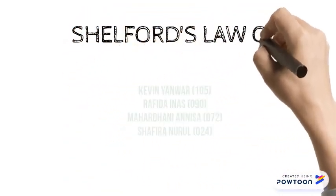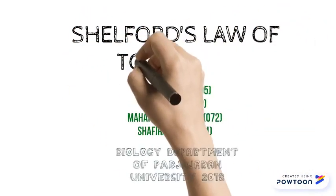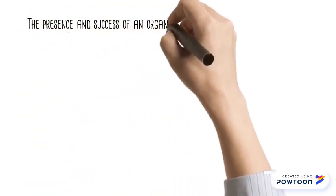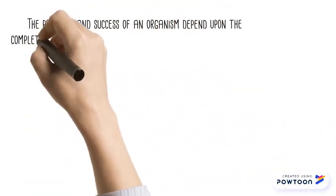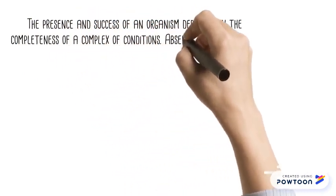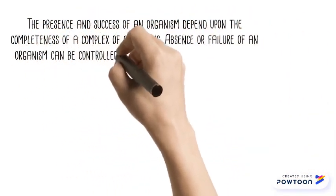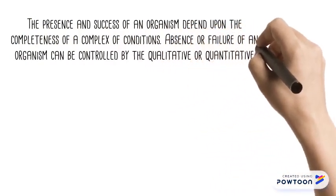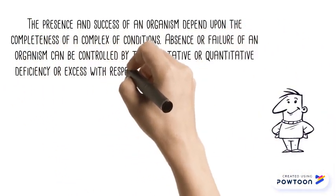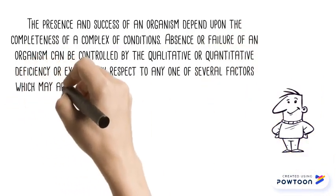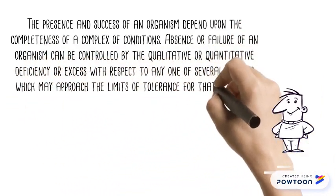Shelford's Law of Tolerance. The presence and success of an organism depend upon the completeness of a complex of conditions. Absence or failure of an organism can be controlled by the qualitative or quantitative deficiency or excess with respect to any one of several factors which may approach the limits of tolerance for that organism.